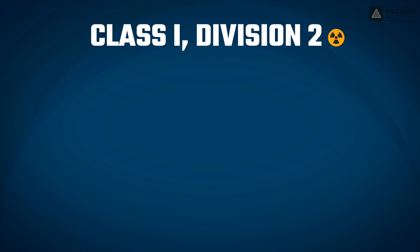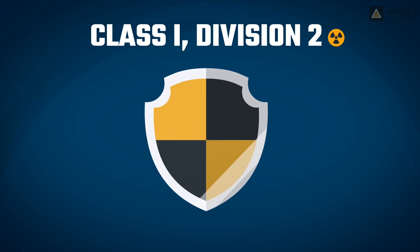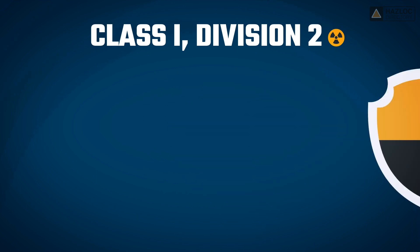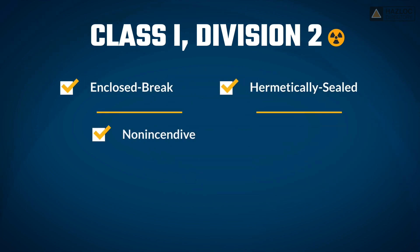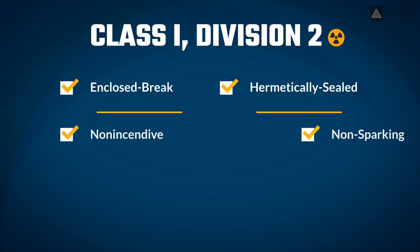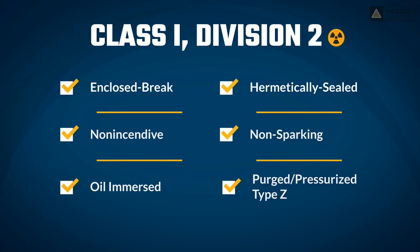In order to be certified as compliant with safety standards for Class 1, Division 2, the product must be protected by one or more of the following protection techniques: enclosed break, hermetically sealed, non-incendive, non-sparking, oil immersed, purged/pressurized Type Z, as well as any of the Class 1, Division 1 protection techniques.